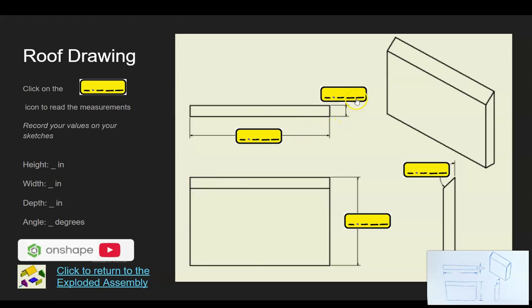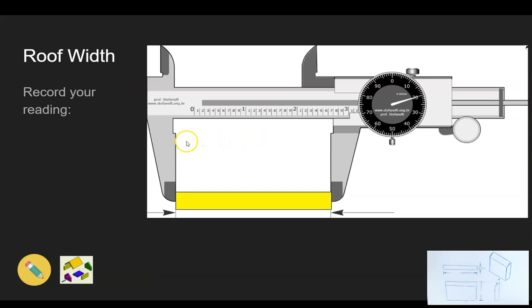Click the pencil icon to get back to the drawing. Let's measure the width of the roof. The width of the roof is now being measured with the caliper. We have zero inches, one, two, three whole inches. We'll write down a three and decimal point.